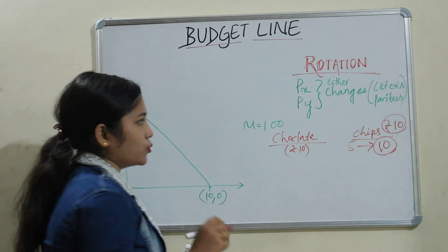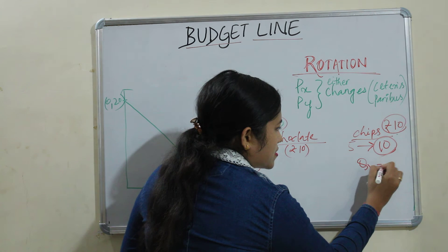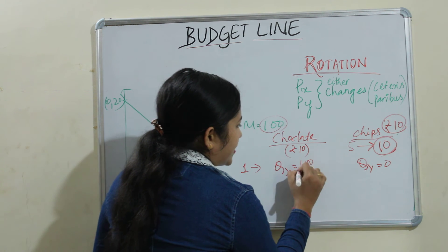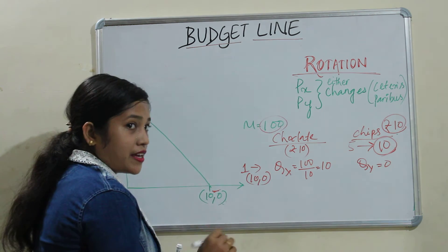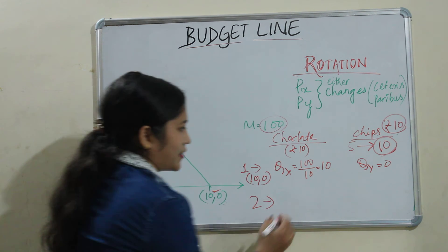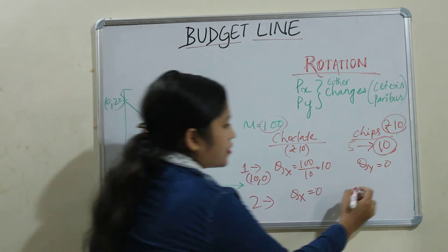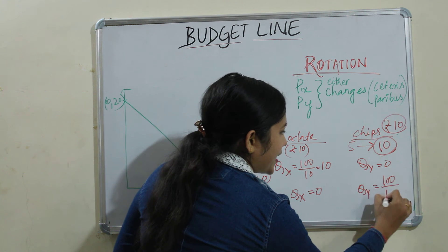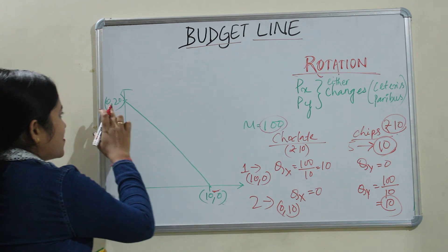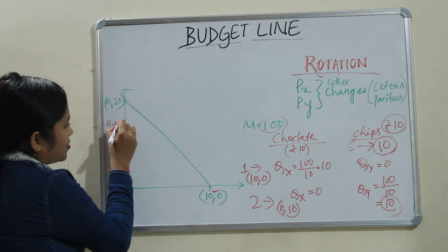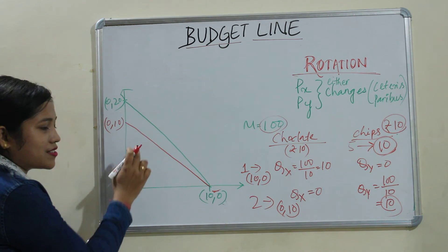We follow the same procedure with 100 rupees. First case: no chips purchased, QY is 0, so QX equals 100 divided by 10, which is 10. The point remains the same: 10, 0. Next case: no chocolate purchased, QX is 0, so QY equals 100 divided by 10, which is 10. The new point is 0,10 instead of the original 0,20. This same anchor point but a new endpoint means the budget line rotates inward. This is called rotation.